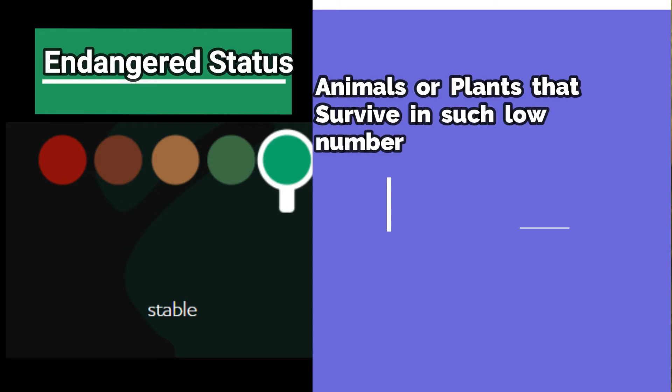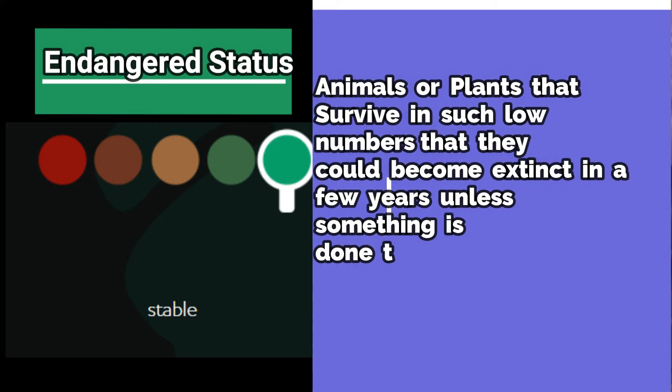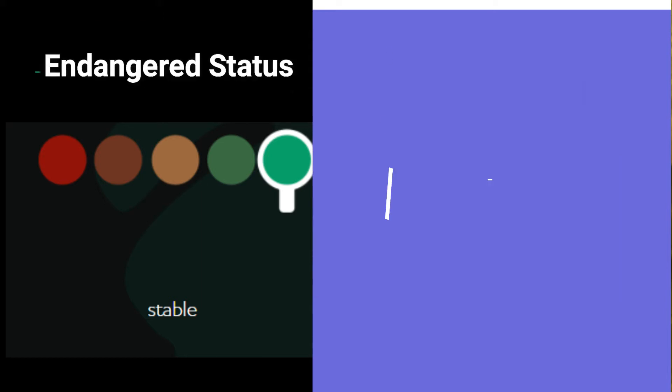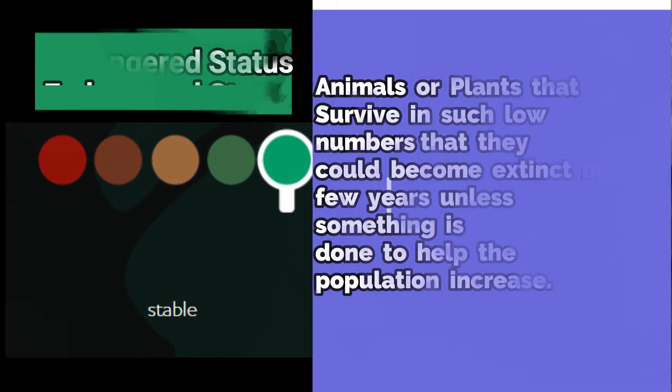Endangered status: stable. Do you know what 'endangered' means? Endangered means animals or plants that survive in such low numbers that they could become extinct in a few years unless something is done to help their population increase.